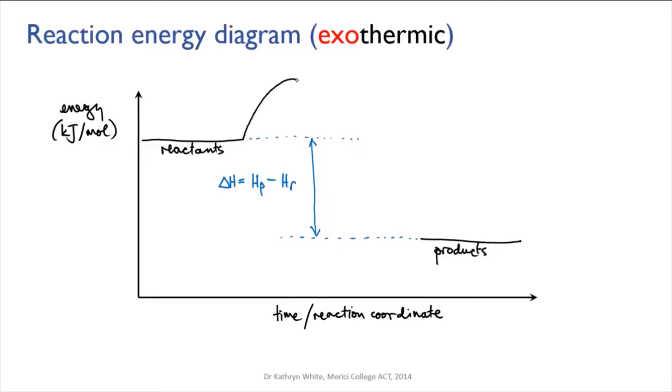At that point product molecules start being made and energy starts being released. So the energy decreases and decreases until all the reactants have been transformed into products and we're at the product energy level.